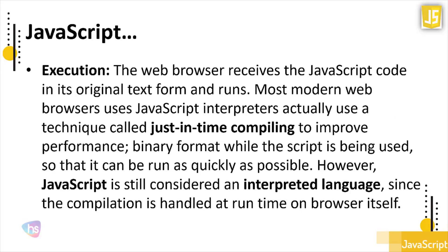Knowing more about JavaScript: the execution process in JavaScript is handled by the browser itself. The web browser receives the JavaScript code in its original text form and runs it. Most modern web browsers use a technique called just-in-time (JIT) compilation to improve performance, converting code to binary format while the script is being used so that output is given as quickly as possible.